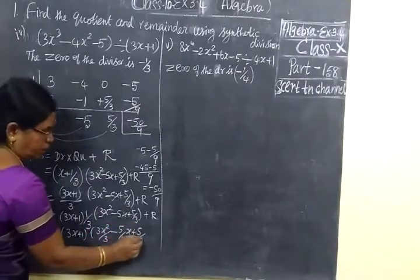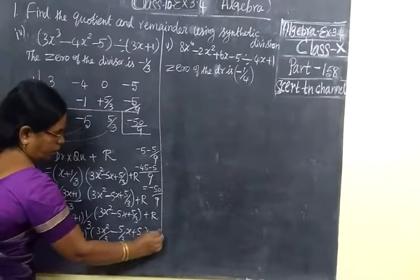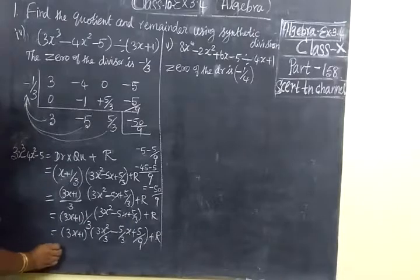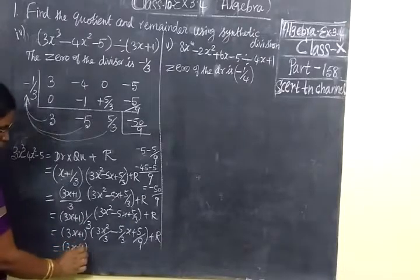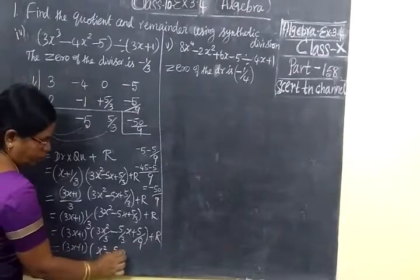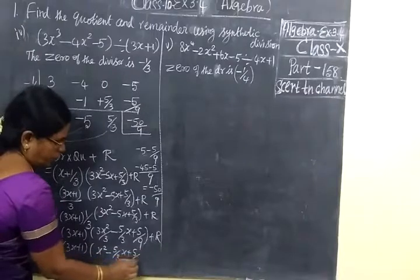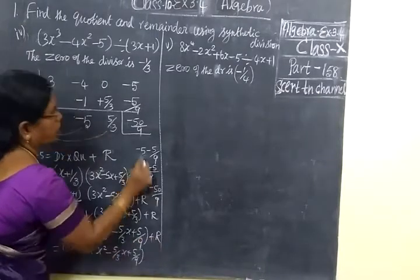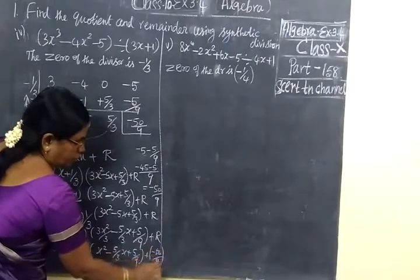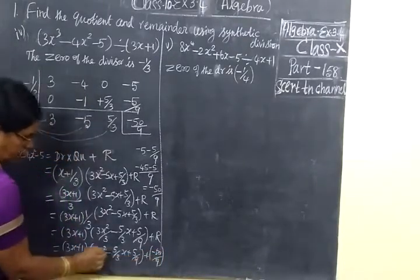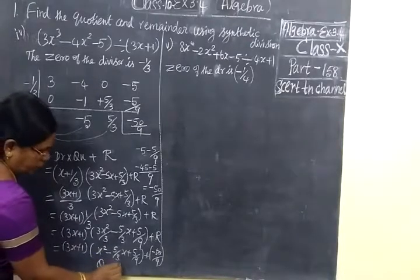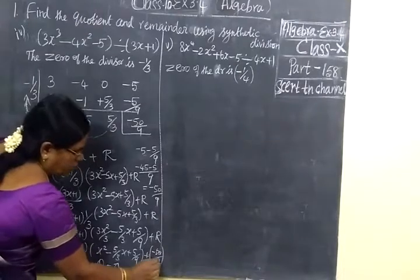The 3 in the denominator goes to all the terms, making denominator 9. So this is equal to 3x plus 1 — the terms are x squared minus 5 by 3x plus 5 by 9. Then the remainder is minus 50 by 9. So this is the remainder and this is the quotient. When you write quotient we write this answer, and for remainder we write this.